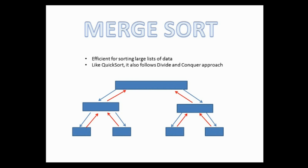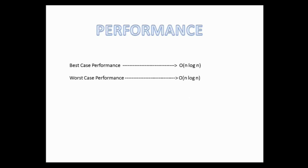As you can see in the figure, let's take a look at its performance. Its best case performance is O(n log n), and its worst case — or average case — is also the same: O(n log n). Now let's understand it through an example.